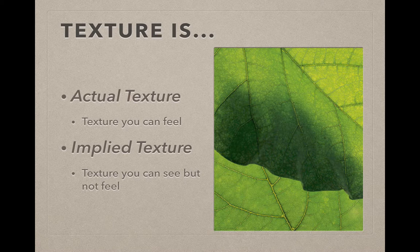Applied texture is the second part of the original definition — that is texture that you can see but you can't feel. When you look at the picture here to the right, you'll see that it's a close-up picture of leaves. You can imagine if you were touching the real leaves, you could feel the texture of the leaf, the veins in the leaf.